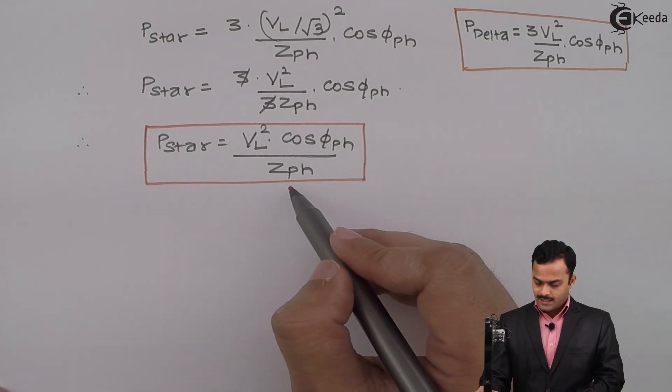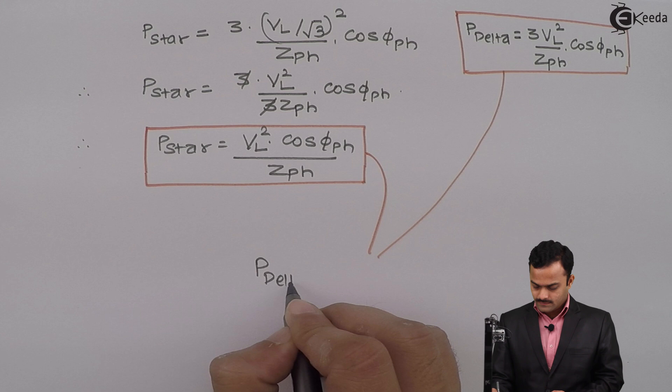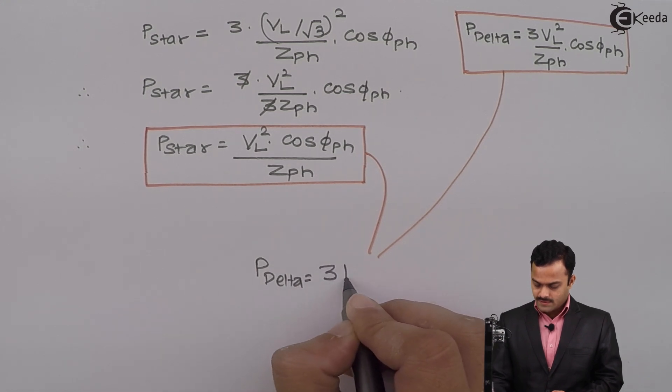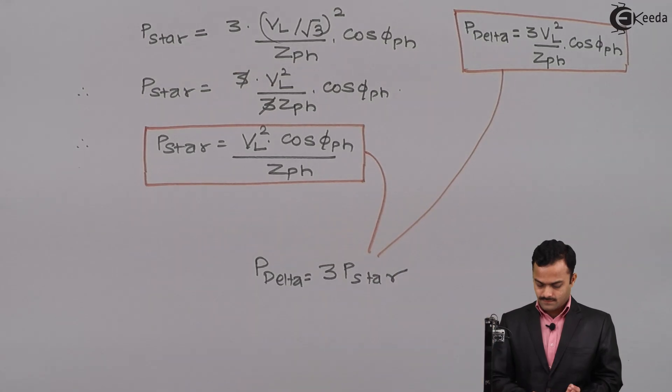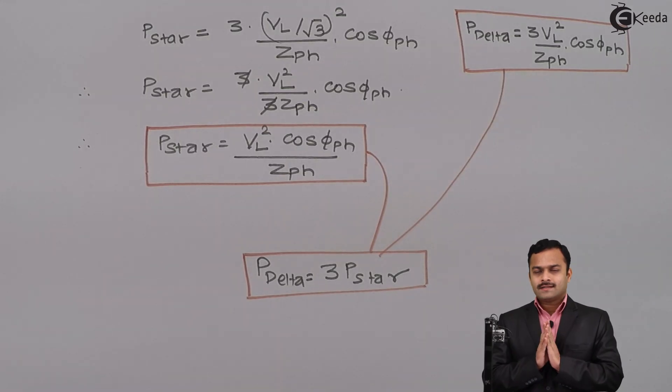Now if we compare these two, we will get P delta is 3 times P star. Meaning, for same line voltage and same load in magnitude and phase angle, if I change the arrangement from star to delta, my power will increase 3 times. So power consumed in delta is 3 times power consumed in star.